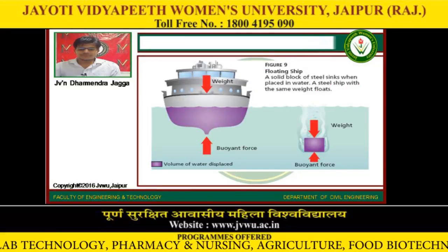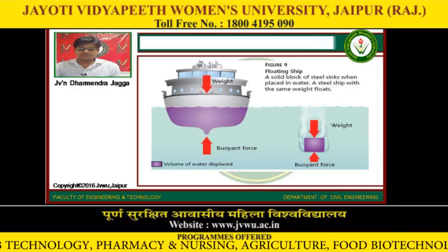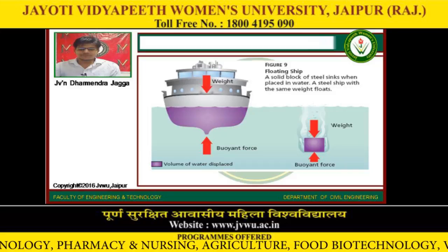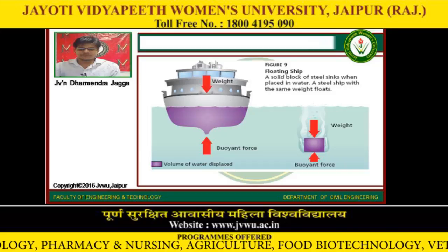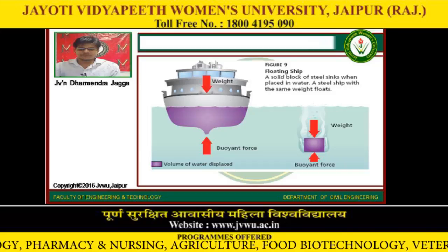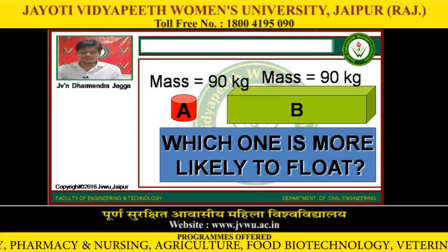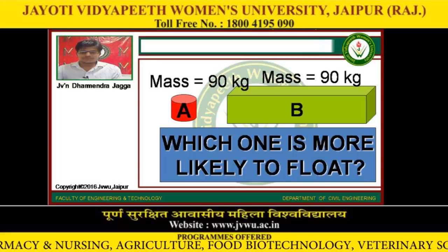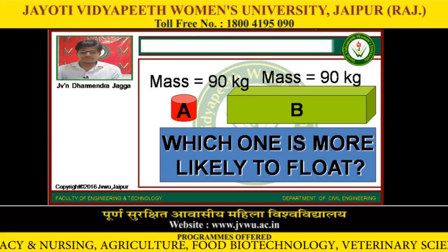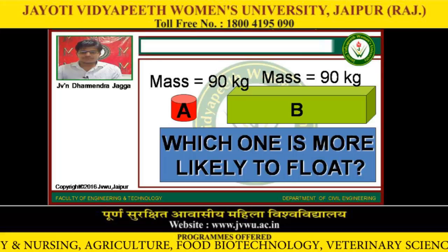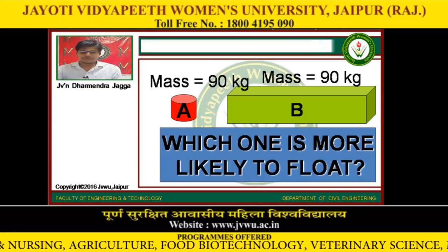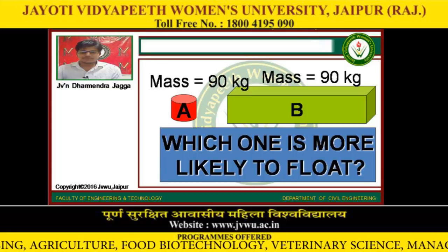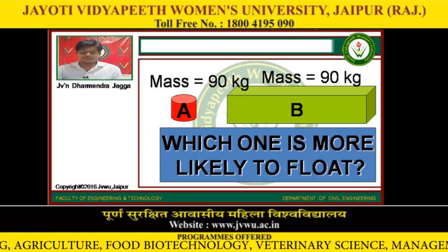This figure shows a floating ship. A solid block of steel sinks when placed in water, but a steel ship with the same weight floats. The buoyant force and weight are shown. Figure A and B both have equal mass — which one is more likely to float?